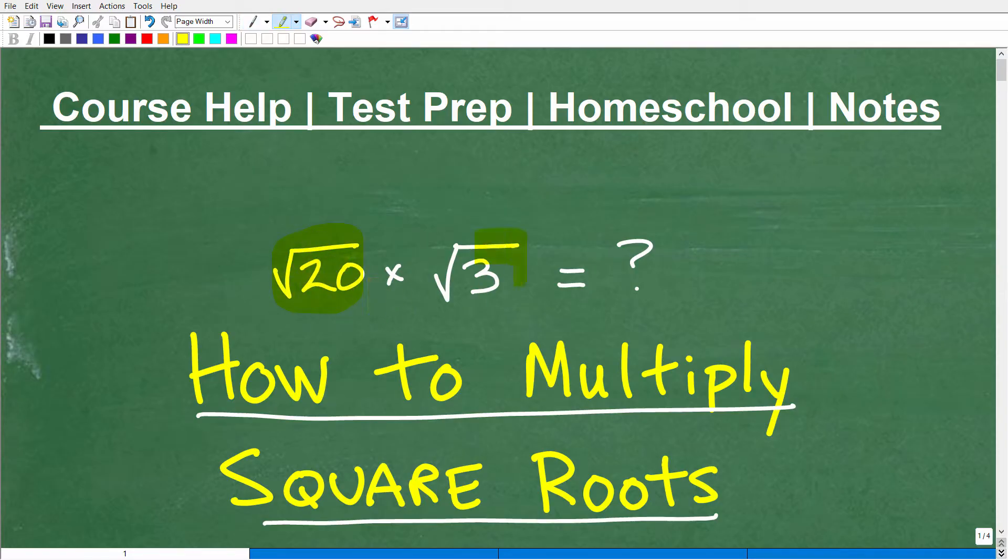So we have the square root of 20 times the square root of 3. Now, some of you might be thinking, well, I'll just get my calculator out and figure out what the square root of 20 is, and then I'll take the square root of 3. I'll have some decimals. I'll multiply those decimals together, and that'll be the answer.